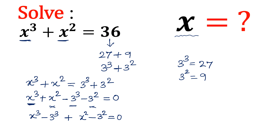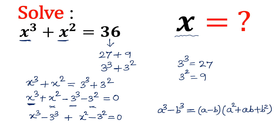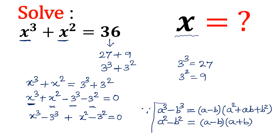We know the identity: a³ - b³ = (a - b)(a² + ab + b²). And similarly, a² - b² = (a - b)(a + b). We will use these identities to simplify the equation.